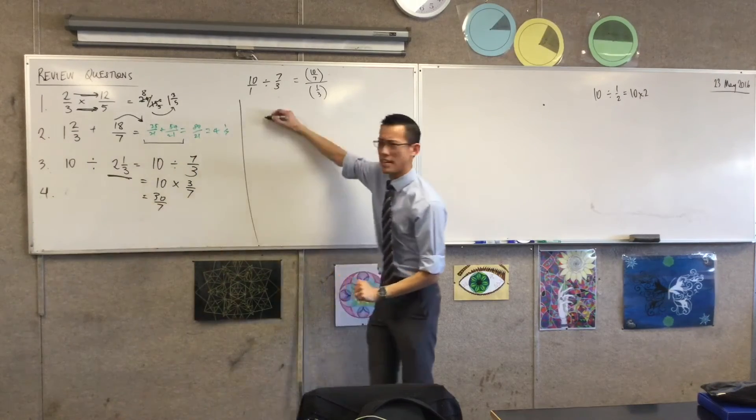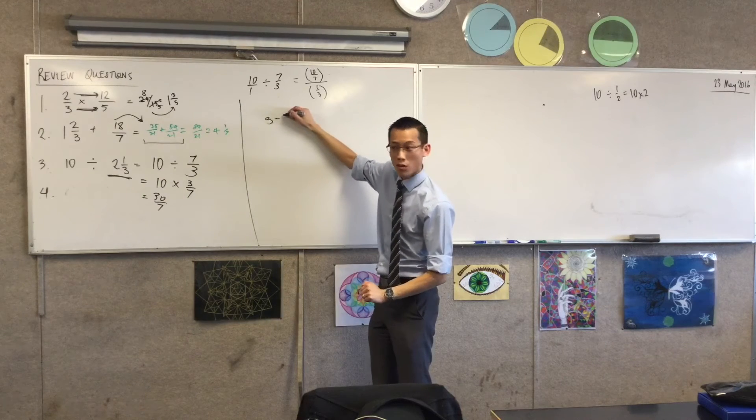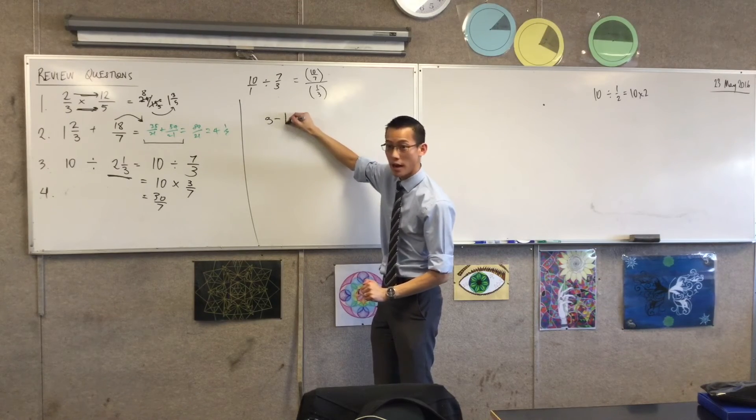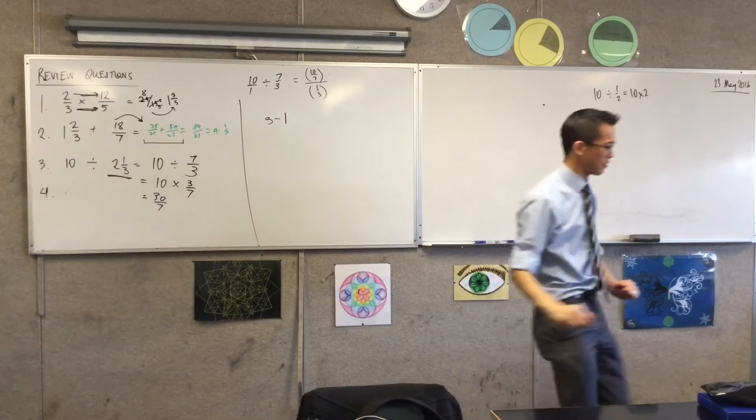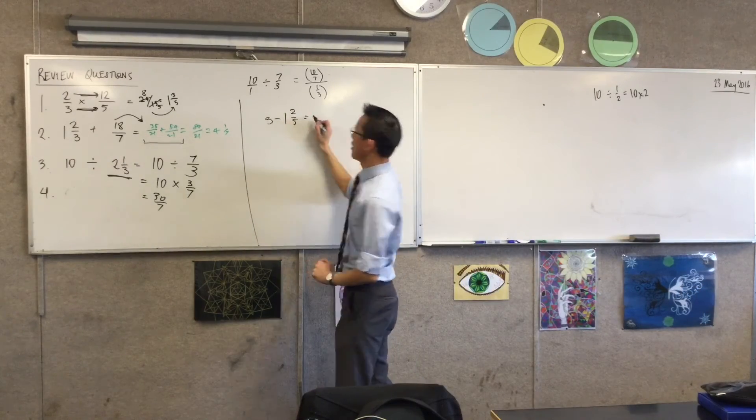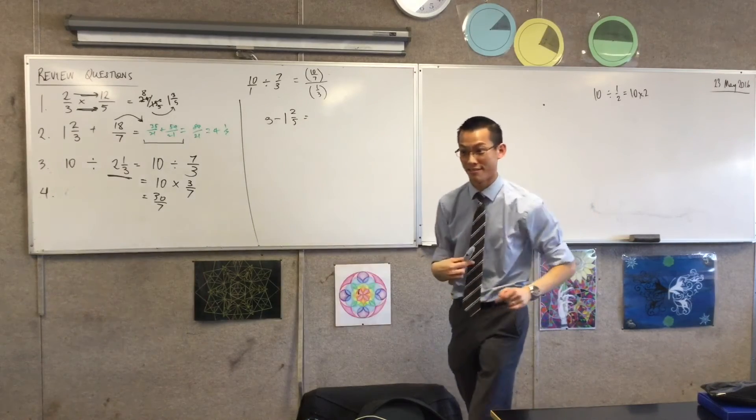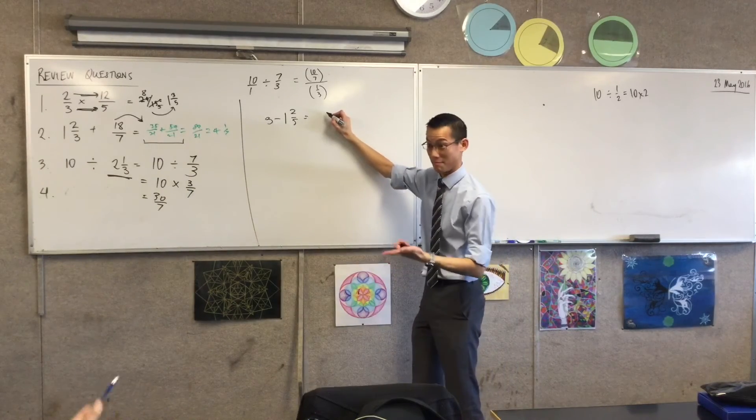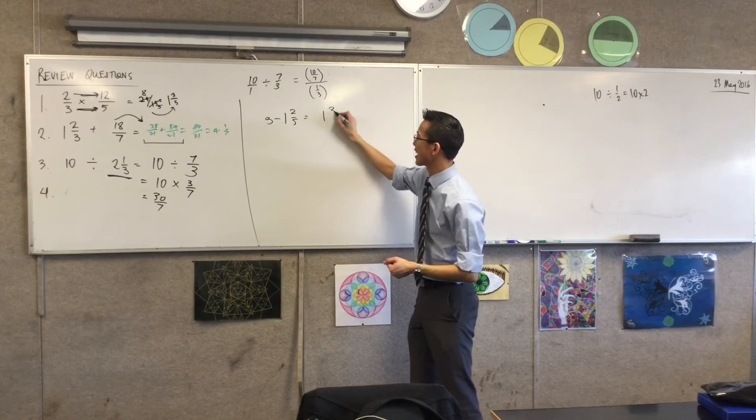All right, what was the last question? It was three take away something, right? Three take away, one and... I literally can't remember because I didn't write down. One and two-fifths. One and two-fifths, thank you very much. Okay, now, question, yes, or answer. N. Yeah, okay. Yeah, one and three-fifths. Okay, fantastic.